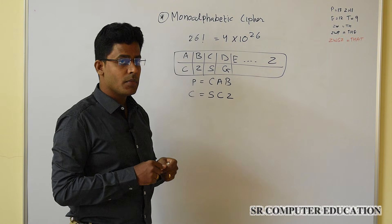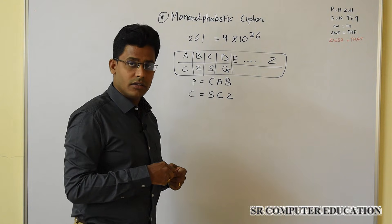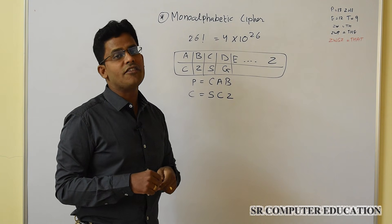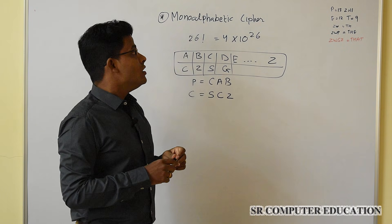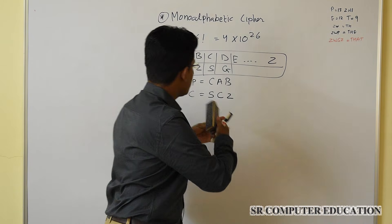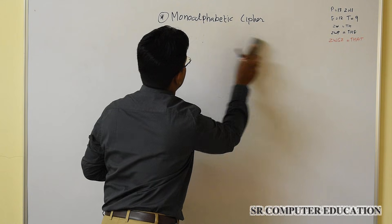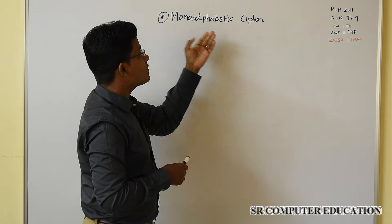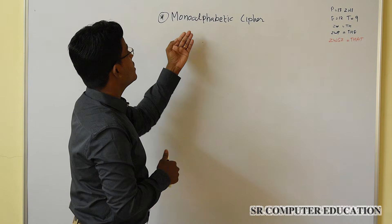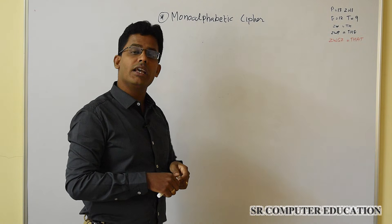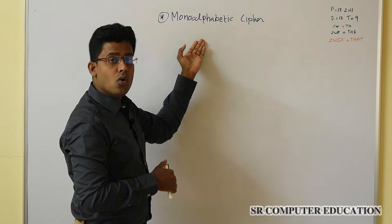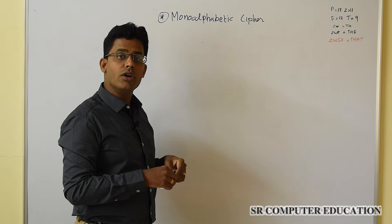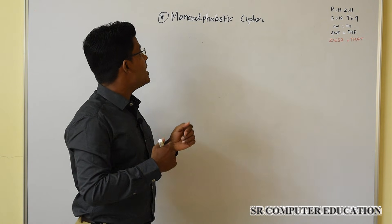The encryption and decryption is simpler in mono-alphabetic cipher, but it is difficult for an attacker to decrypt the plain text without knowing the key. Now the interesting part is how a cryptanalyst or attacker can decrypt your cipher text without knowing the key. The attacker knows about the frequency of letters used in the English language — I will tell you how the attacker is going to decrypt it without knowing the key.